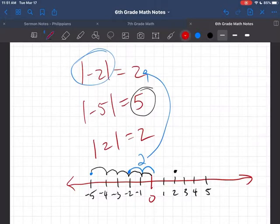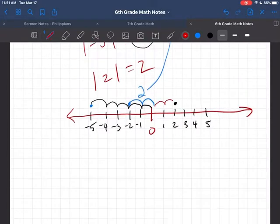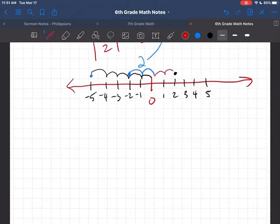Two is right here. What's its distance from zero? Well, it is one, two away from zero, which makes sense. But when you're dealing with distance, you think about absolute values.